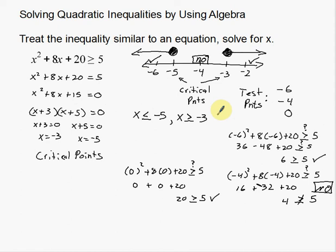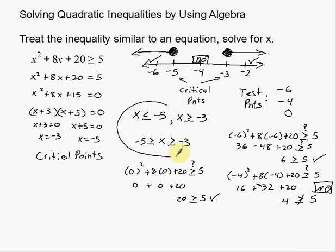Depending on what your teacher wants, you can write this as two separate inequalities — x ≤ -5 and x ≥ -3 — since there are two regions. Or you can write it as a combined inequality: negative 5 is greater than or equal to x, which is greater than or equal to negative 3. Either form should be acceptable, but check with your teacher.